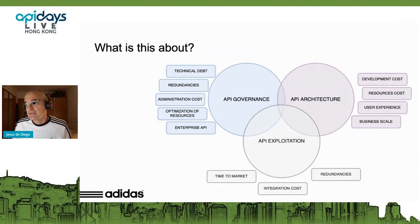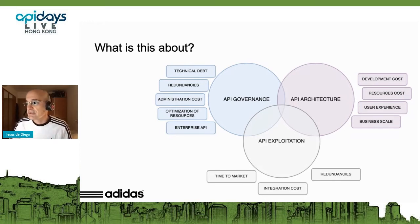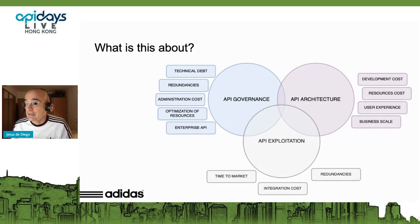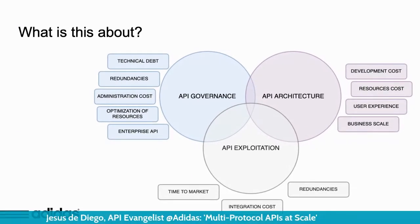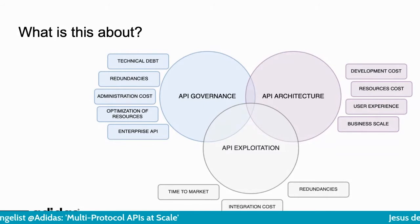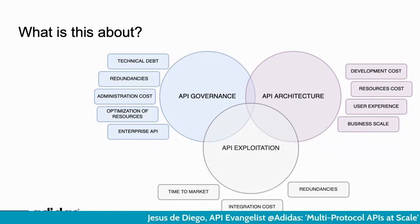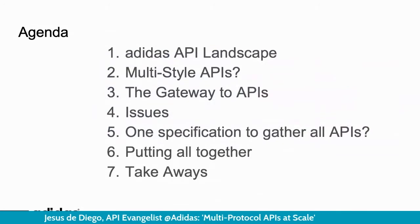Regarding this track and this specific section, it is about API governance and APIs in enterprise context, but it is also about architecture and exploitation. In the API platform at Adidas, these three main areas are related to many technical topics: technical debt, redundancies, optimization of resources, and implementation of enterprise API features. Basically this means our time to market is meaningfully reduced and we are lowering the cost of integration in our company, with our partners, and with internal systems.